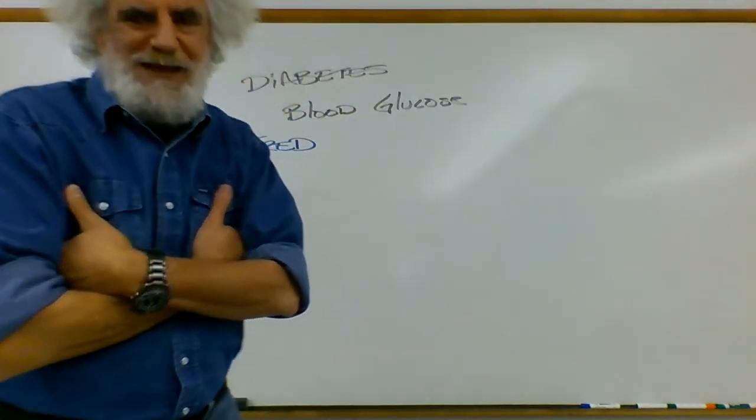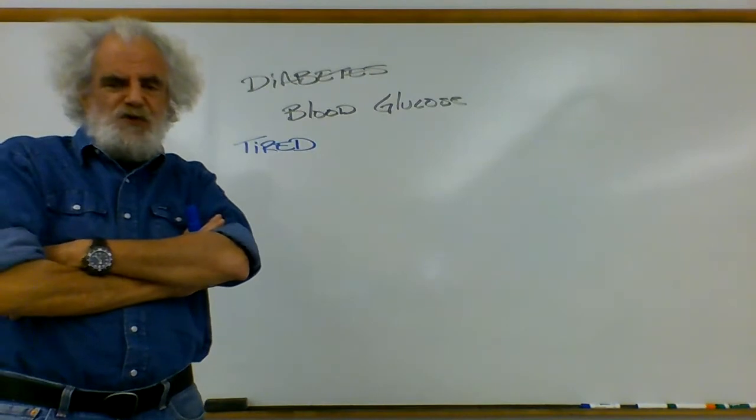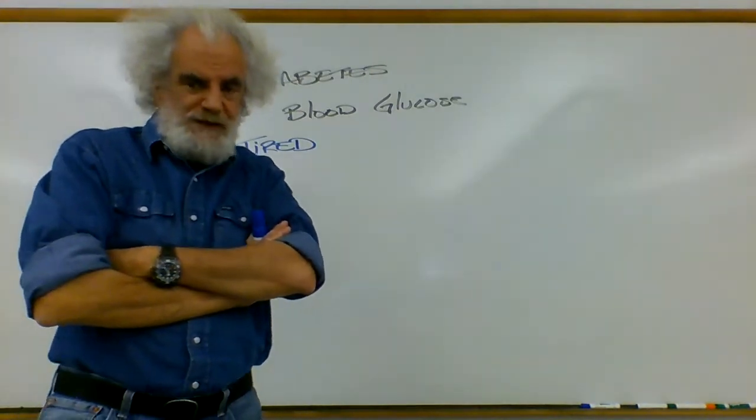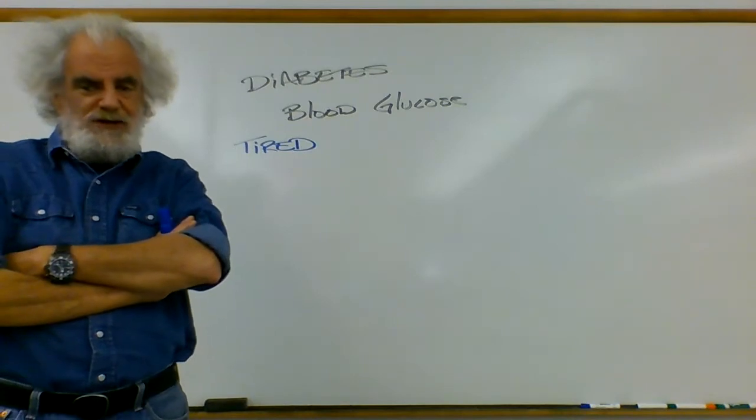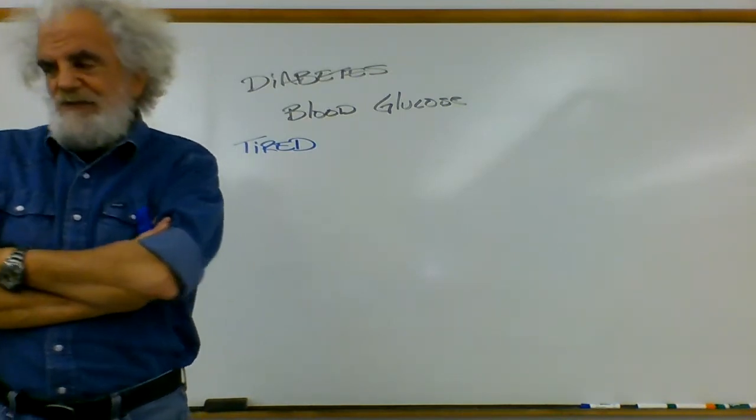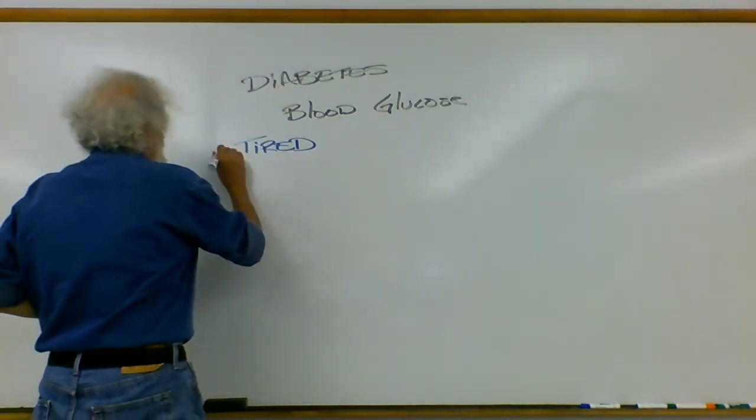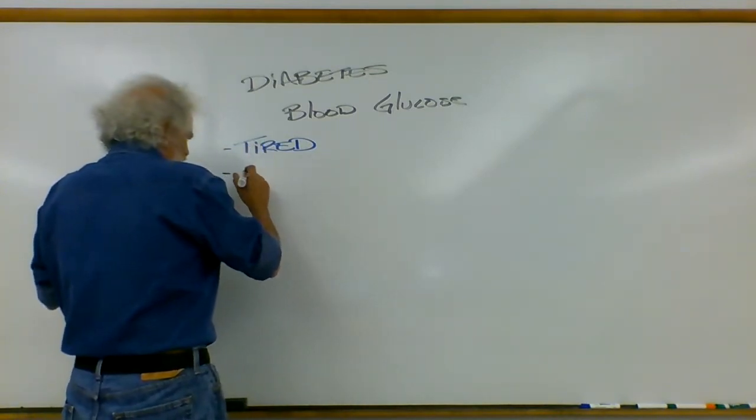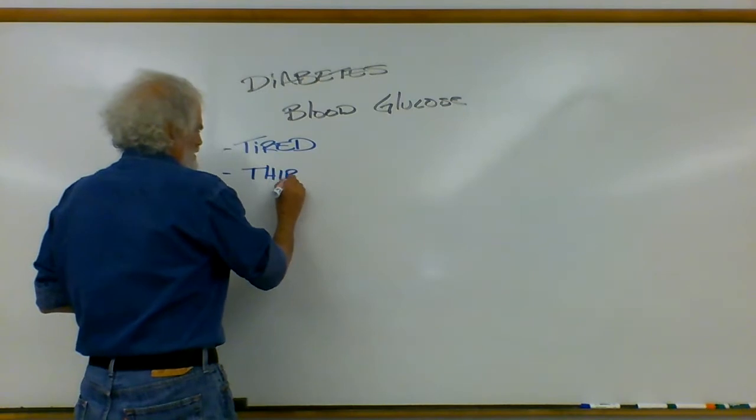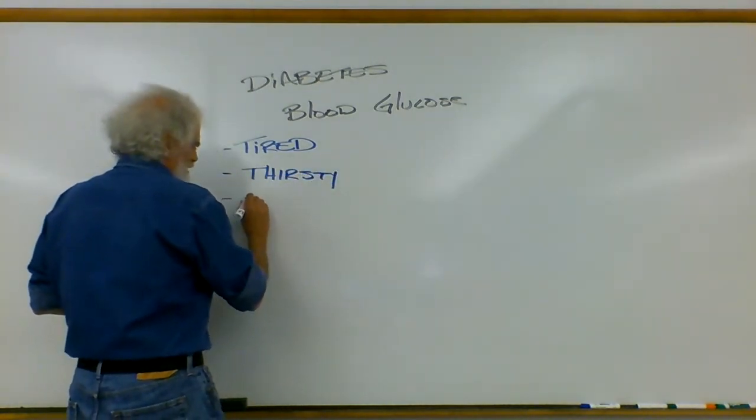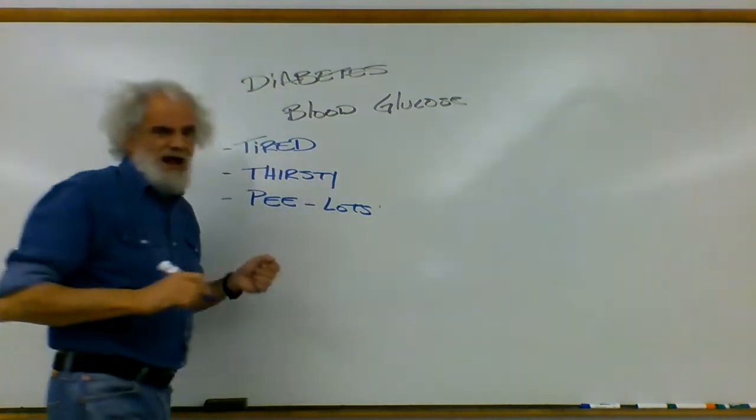Alright, we had a little interruption but we're picking back up. So the symptoms that kids would exhibit when they are showing signs of diabetes is they'll start being tired, mainly because the food they're getting isn't being processed properly and so they're not getting as much energy out of the food as they should. Another thing that happens is as the disease progresses you start getting thirsty and you start to pee a lot. Urine output is increased.